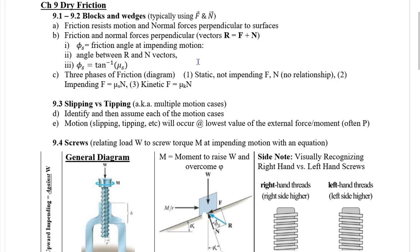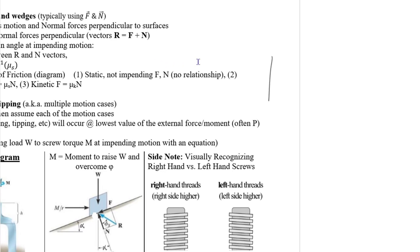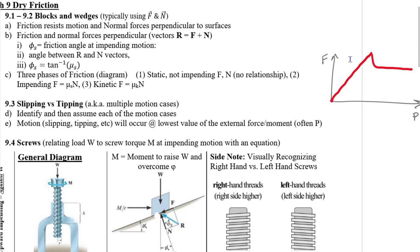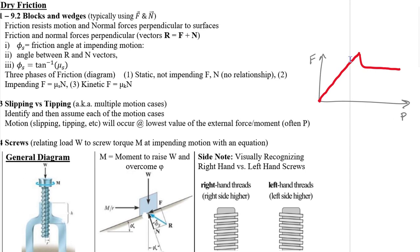We have three phases of friction. If you think of friction on the vertical axis and a driving force P on the horizontal axis, friction can be available but not always used. There's a linear one-to-one relationship between friction and the driving force until we reach maximum friction available, then we sharply drop off to a plateau. Zone one is static but not impending, zone two is impending motion, and zone three is kinetic.